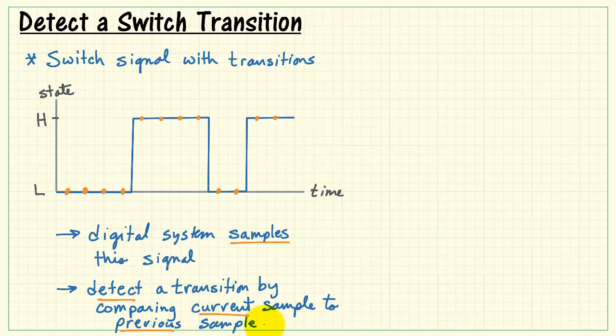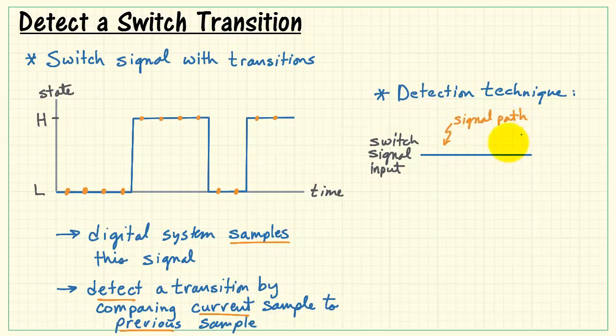I'm going to sketch out a detection technique based on a generic flow diagram. I'll begin with my switch signal as an input. I'll send that along this signal path. And then I'll set up a parallel path that's based on a single delay element. That switch signal goes through the delay and then we have the previous sample available on the output.